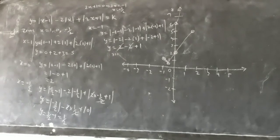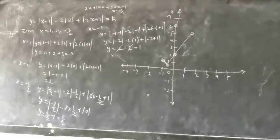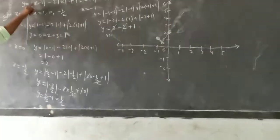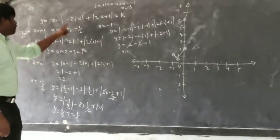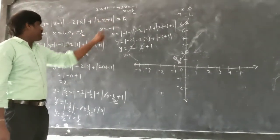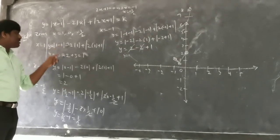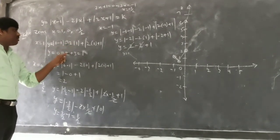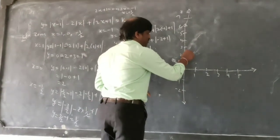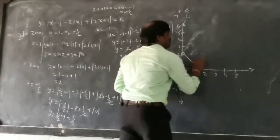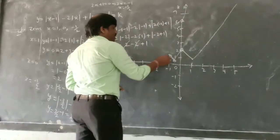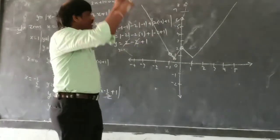Let us also check at x equal to minus 2. If we take any larger values of x in either direction the function values increase further. Connecting all points, the function takes a W shape — it goes up on either side and has two dips in the middle.